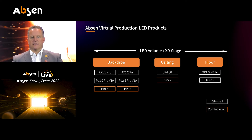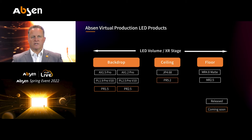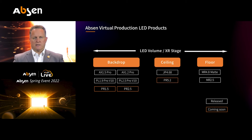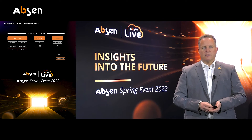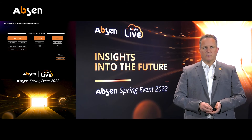The PR series for the new platform will be available in 5.2 millimeter pixel pitch for the ceiling. We also still have in our portfolio with Brompton processing our JP 4.68, which is our lightweight product for the ceiling but can also be used for reflectors and surroundings where reflection might be needed. And we have our LED floor with 4.8 millimeter pixel pitch with a matte surface, and we will come up with a 2.5 millimeter quite soon as well.